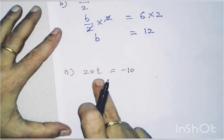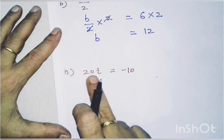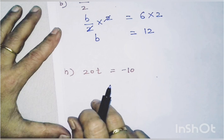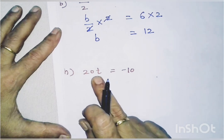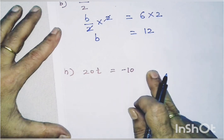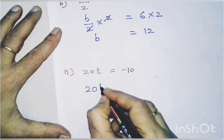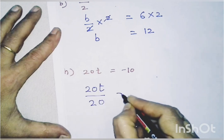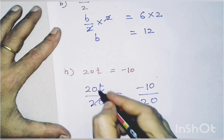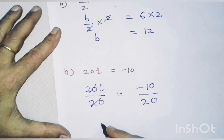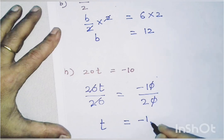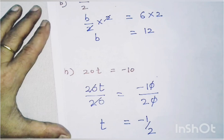The next equation has 20T. Since 20 is in multiplication form, we divide both sides by 20. So 20T upon 20 equals minus 10 upon 20. The 20s cancel, and T equals minus 1 upon 2.